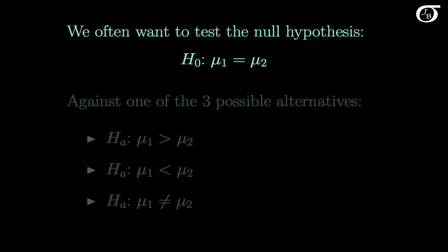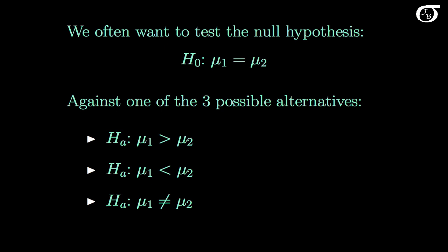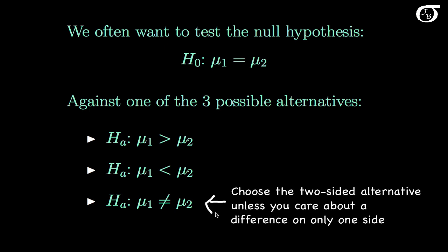We are often interested in testing whether there is a difference in the population means of two groups. For example, we might test whether one teaching method is more effective than another, or if Harvard law graduates make a different amount of money on average than Yale law graduates. In these cases we test the null hypothesis that the population means are equal, and we choose from three alternative hypotheses — picking the two-sided alternative unless we have a strong reason to focus on only one side.